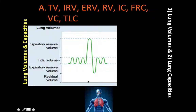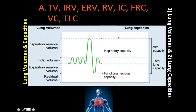Now let's talk about lung capacities. Before moving on, here's a mnemonic to remember them in order: LITER — L-I-T-E-R — so you don't mix them up. Lung capacities are essentially the sum of two or more lung volumes. Inspiratory capacity is the sum of the inspiratory reserve volume and the tidal volume.